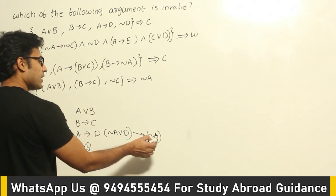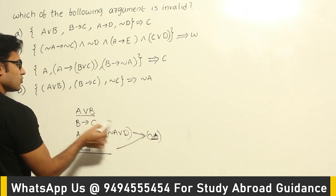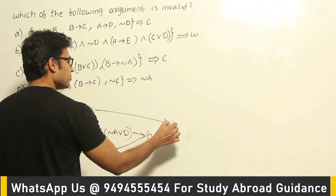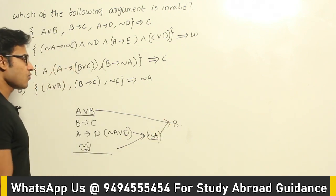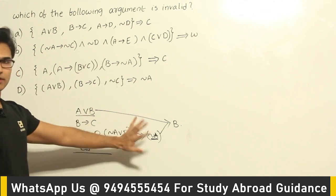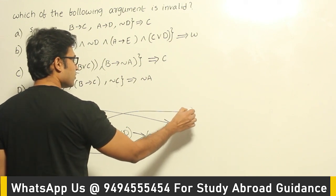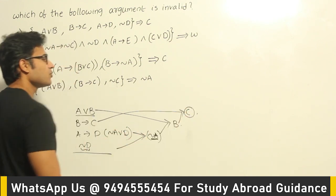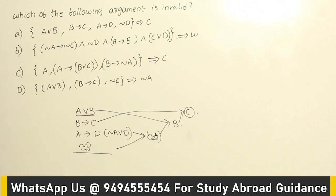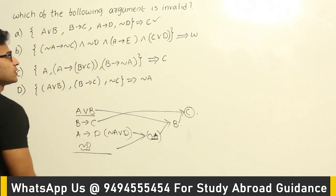Negation A is true means A is false. A is false, and if the entire disjunction A or B has to be true, then only B can be true. From these two we draw the conclusion that B is true by disjunctive syllogism. Now B implies C is given and B is given, so by modus ponens we conclude C. The overall conclusion is C, so this is a valid argument. But we are supposed to find the invalid argument.